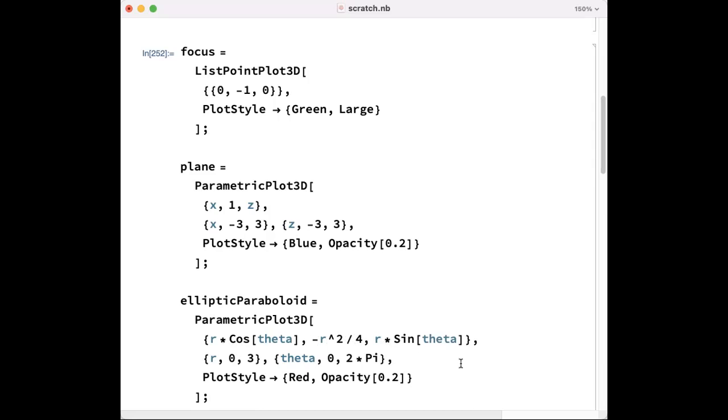Now, if you think about X equals R cosine theta and Z equals R sine theta, this is like saying Y equals minus (X squared plus Z squared) divided by 4. I'm saying X is R cosine theta, Z is R sine theta. Forgive me if I misspoke. Let's use the disks of radius 0 to 3, theta 0 to 2 pi, and let's make this object red and transparent.